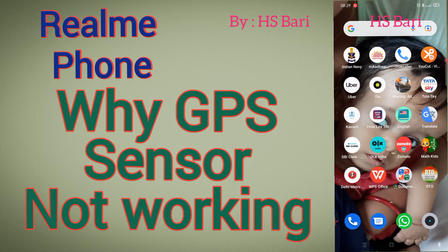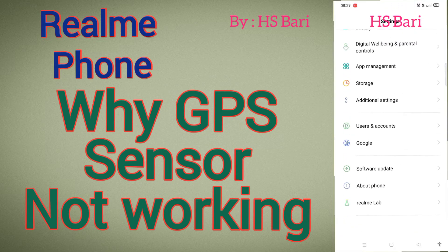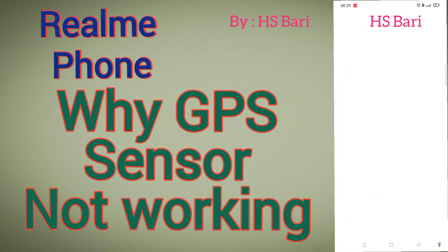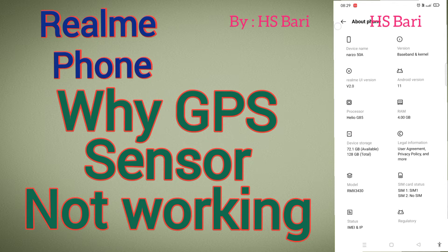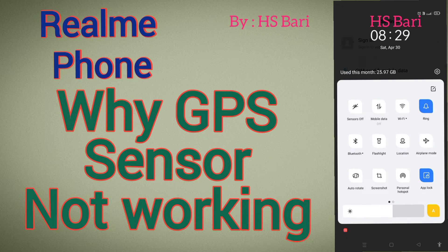Today in this video we will discuss the software reason why your GPS is not working. Here, inside About Phone, you can see I am using a Realme smartphone for making this video. Basically, you have to turn the sensor on and off by clicking the sensor off button — as you can see, the sensor button is here. By toggling this button, all the sensors get refreshed and your GPS problem will be solved.